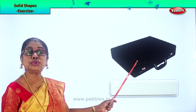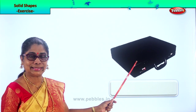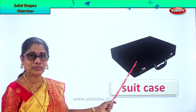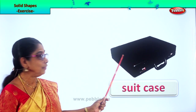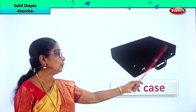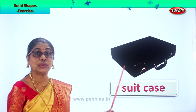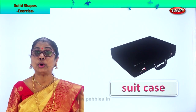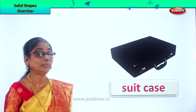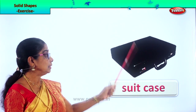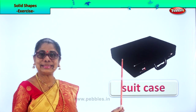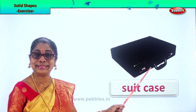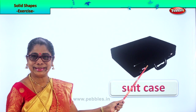Now what is this? A suitcase. Yes, you've seen a suitcase your daddy has, you take to the office. Yes, suitcase is also an example of a cuboid. Look at the opposite sides. Good — solid cuboid.